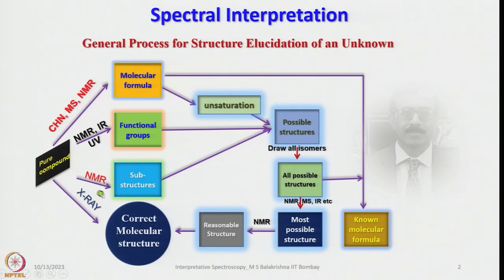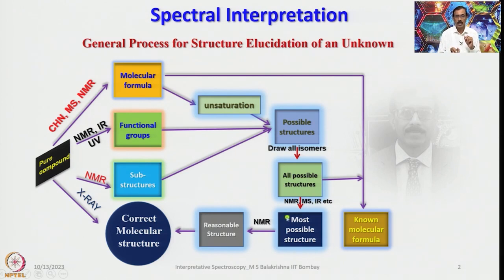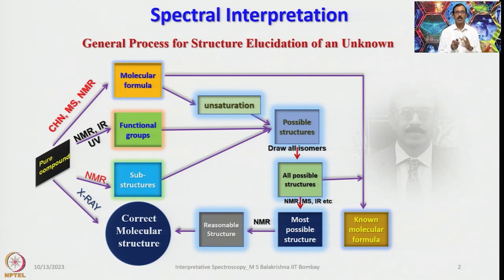Substructures can be identified again using NMR, and eventually X-ray if it is a solid compound and single crystals can be obtained. The molecular formula can also give information about saturation and unsaturation. We then arrive at possible structures, write all possible isomers if any, and again rely on NMR, mass, and IR to identify fragments, chemical shifts, and stretching frequencies, confirming the structure or comparing with known properties.